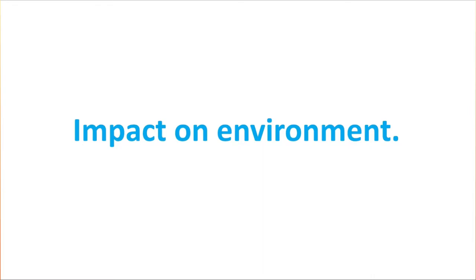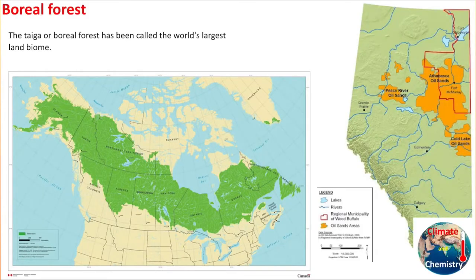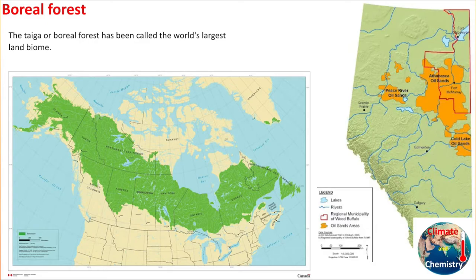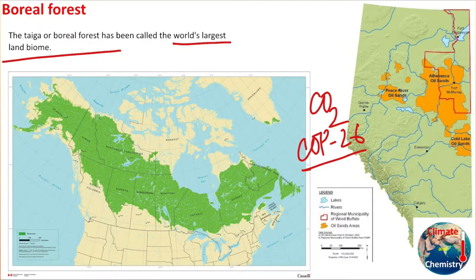Economically it's not profitable, and it is also disastrous for the environment — that's why some people call this oil 'dirty oil.' Looking at Canada's map, the majority of its population resides near the US-Canada border. The green area shown is the boreal forest — the world's largest land biome. It is a carbon dioxide sink, absorbing CO2 from the atmosphere.